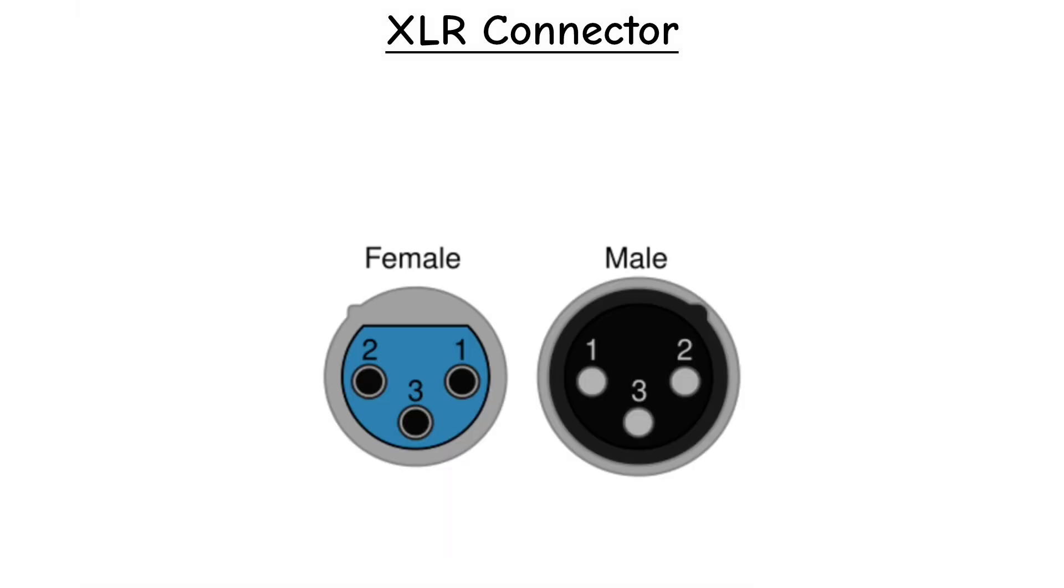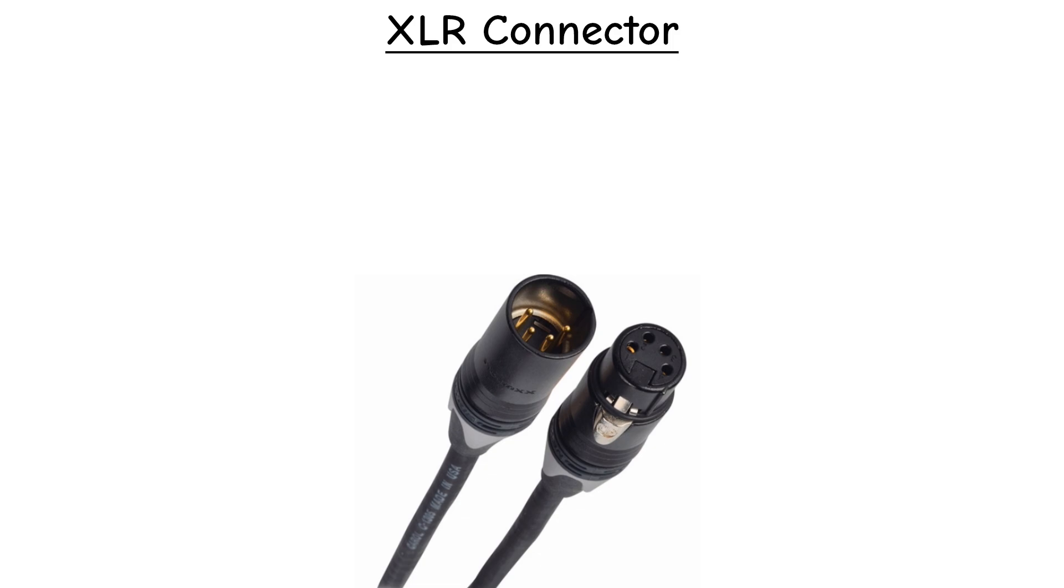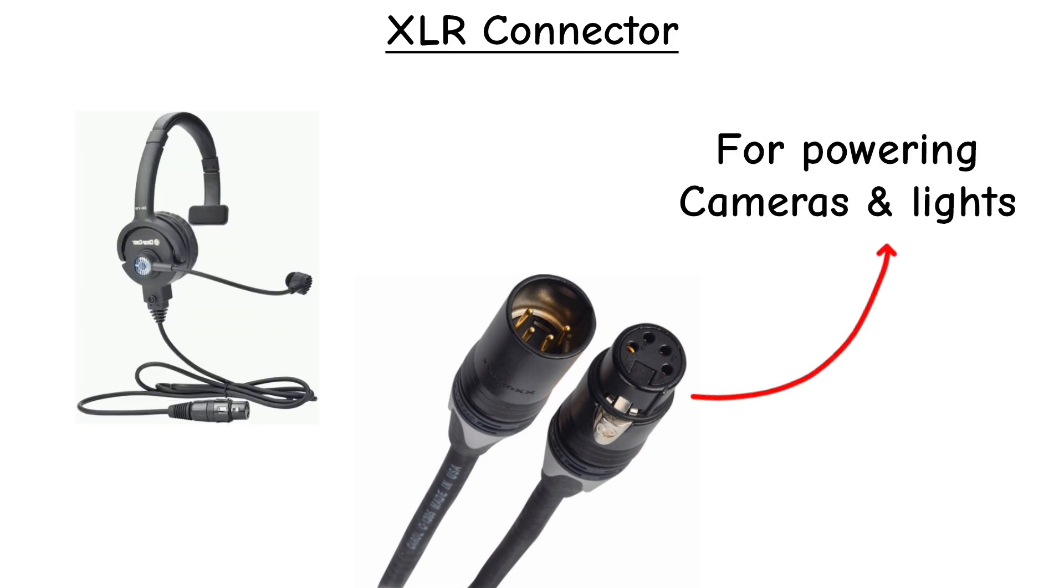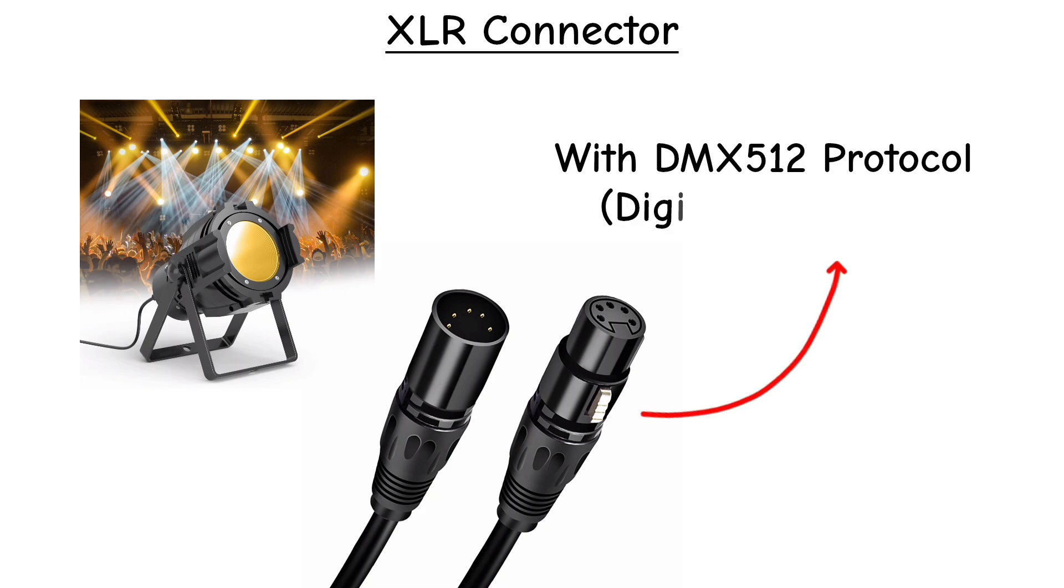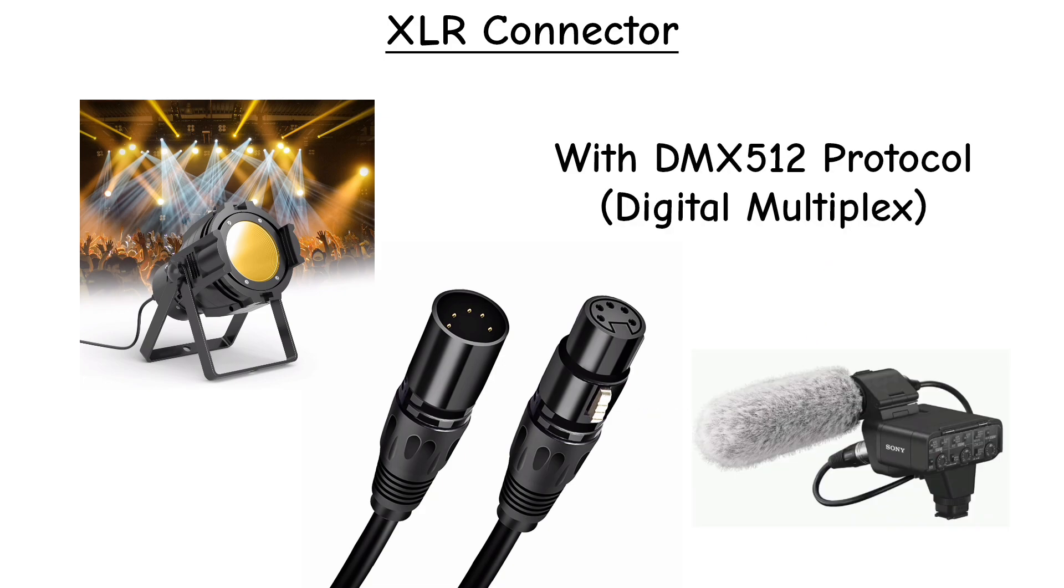The most common version is the 3-pin XLR, wired with pin 1 for ground, pin 2 for the positive hot signal, and pin 3 for the negative cold signal. The 4-pin XLR is often used for broadcast headsets and DC power, while the 5-pin XLR is widely used in stage lighting with DMX512 protocol and some stereo microphones.